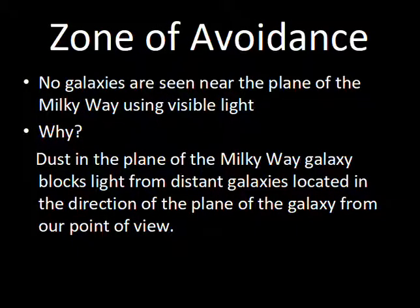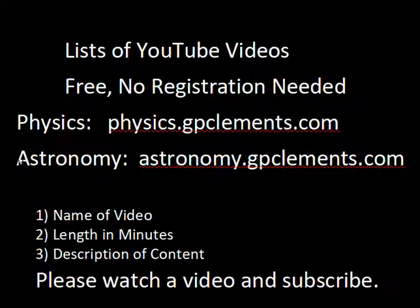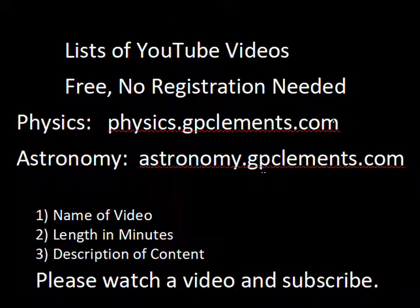So we have answered the question: why is there a zone of avoidance? It's not that the galaxies are not there, and it's not that the galaxies are avoiding the Milky Way. It's that galaxies in line with the plane of the galaxy, from our point of view, have their light blocked by dust in the plane of the galaxy. That dust between us and the distant galaxy prevents the light from reaching us at visible wavelengths. I hope you enjoyed this short video — you can go to these websites to look at a list of other physics and astronomy introductory videos.